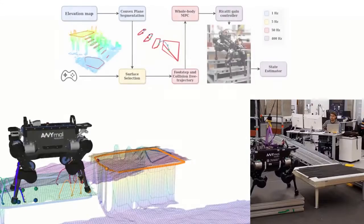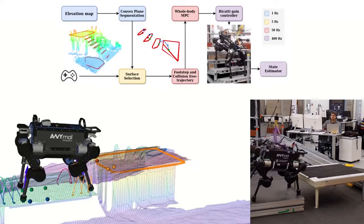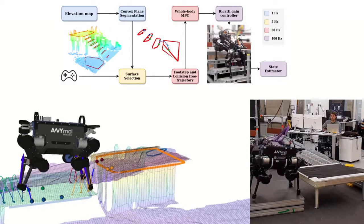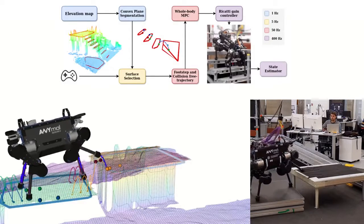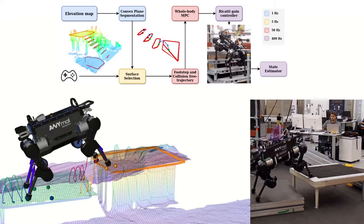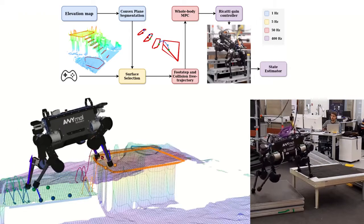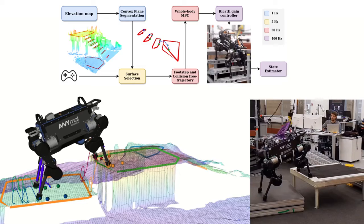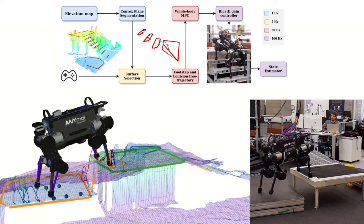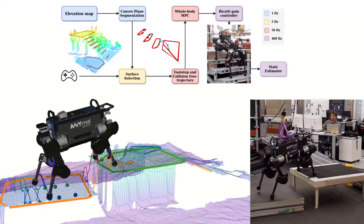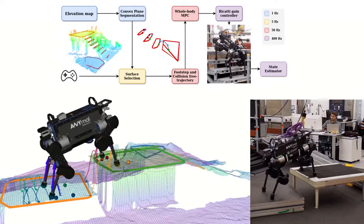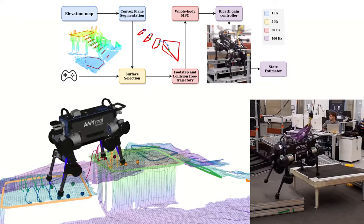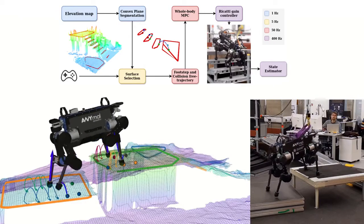We decompose our perceptive locomotion architecture into several sub-problems that are easier and faster to solve than solving a large non-linear problem to handle multi-contact scenarios. In these scenarios, the robot needs to select a surface of contact from a wide range of options, which represents a combinatorial problem to be solved in real time.